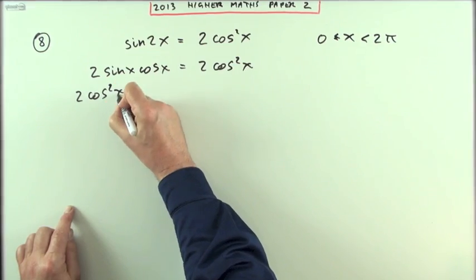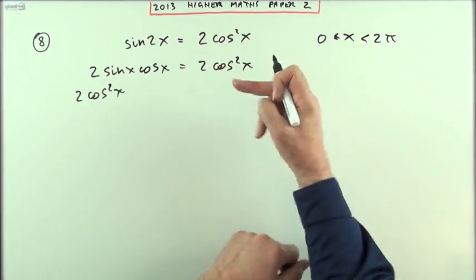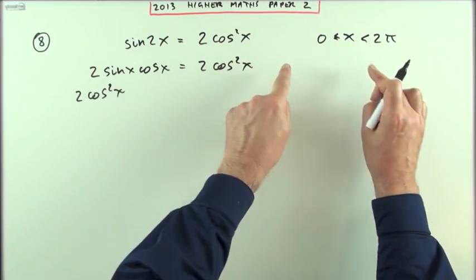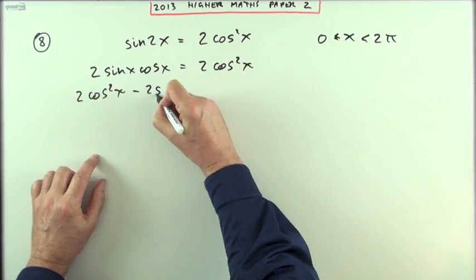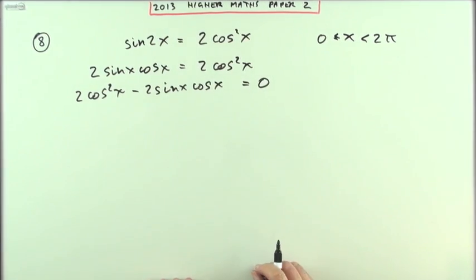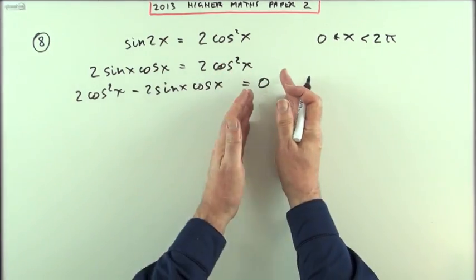So I'll take it all over to one side. I've got 2 cos squared x. I'm actually taking to this side, reading it backwards rather than having a negative at the front: 2 cos squared x minus 2 sin x cos x. So far so good, because I've got everything to one side equal to zero, so I can factorise it usefully.